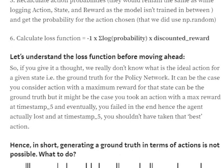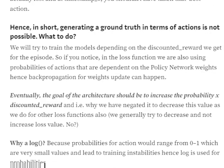The loss function is: minus one times the summation of log probabilities multiplied by discounted rewards. We don't know the ideal action for a given state, so getting ground-truth actions is difficult. Since the policy network outputs action probabilities, unlike normal multi-class problems where we have actual labels, here we use the rewards as a proxy — if the reward is high, the action taken was good; if the reward is low, the action was likely bad.